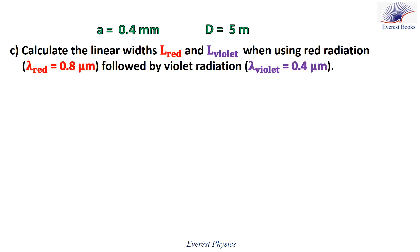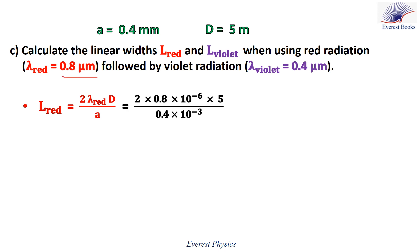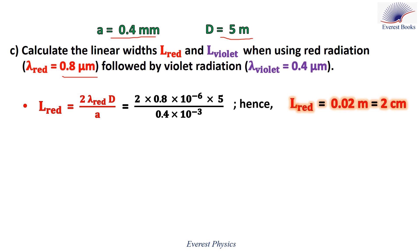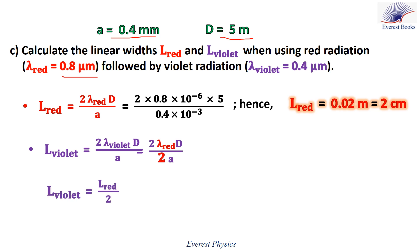For part c, calculate the linear widths l_red corresponding to lambda_red equals 0.8 micrometers and l_violet corresponding to lambda_violet equals 0.4 micrometers. Using l equals 2 lambda d over a: l_red equals 2 times 0.8×10⁻⁶ times 5 divided by 0.4×10⁻³, giving l_red equals 0.02 meters, or 2 centimeters. Since lambda_violet equals lambda_red over 2, we get l_violet equals l_red over 2, therefore l_violet equals 1 centimeter.